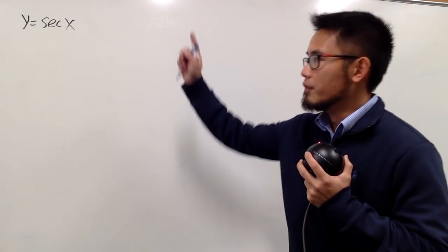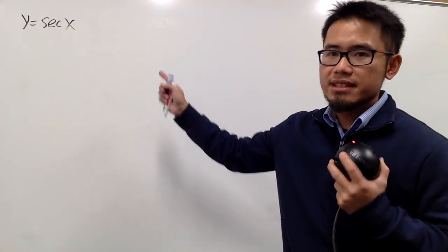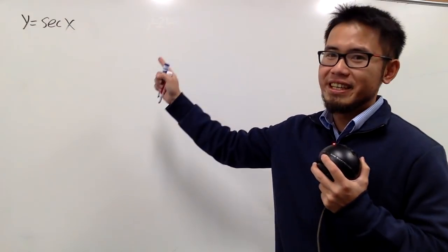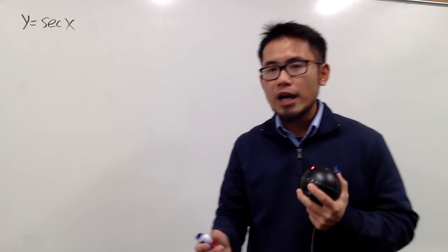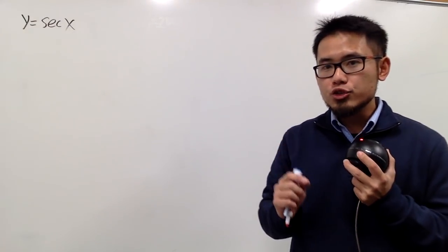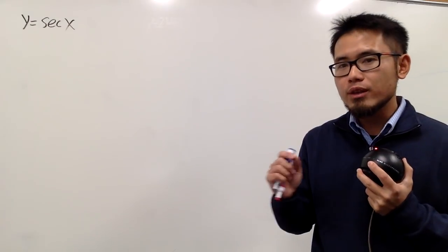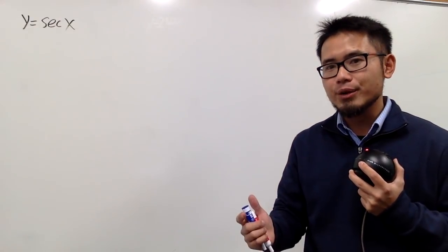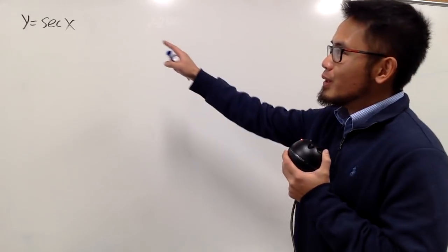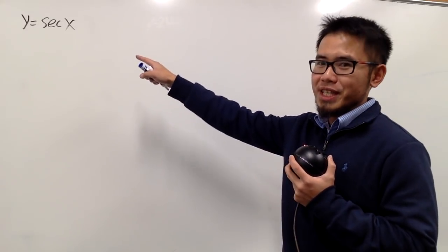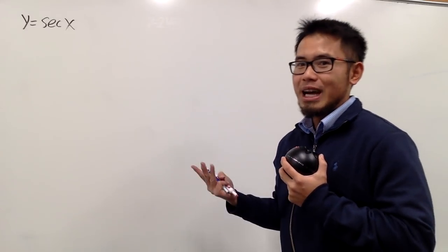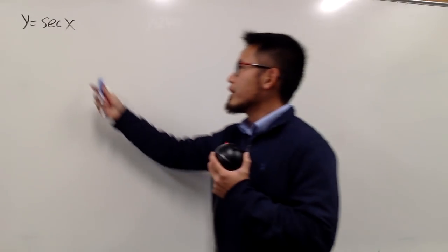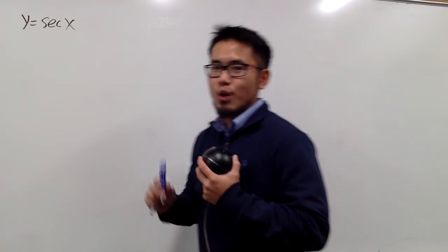We are going to find the third derivative of secant x — namely, we will find the jerk of secant x. We'll do everything from scratch. We only assume that we have the quotient rule and also the derivative for sine x and cosine x. So, to get a third derivative, we just have to differentiate this three times. First of all, let me show you how we can derive secant x from scratch.